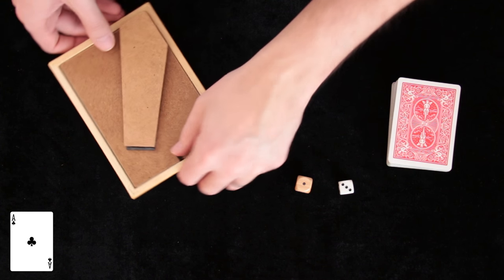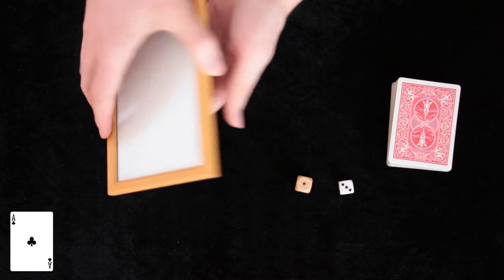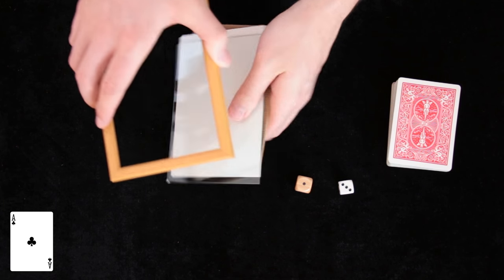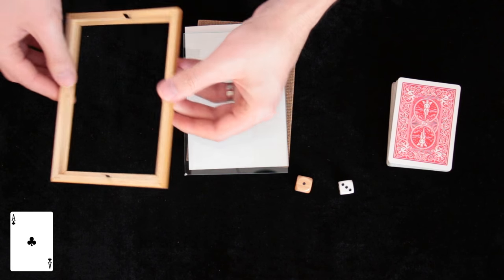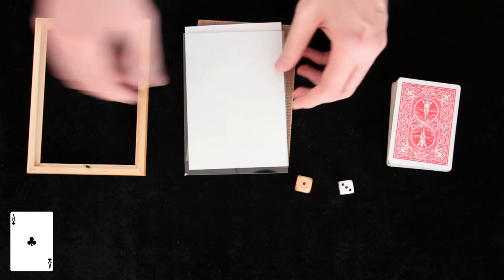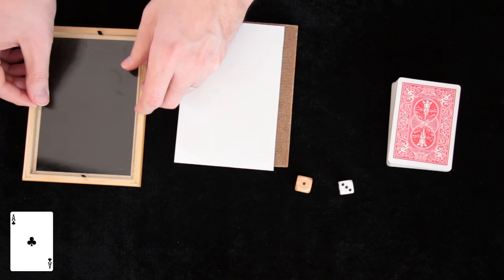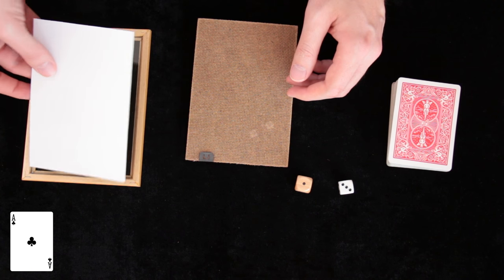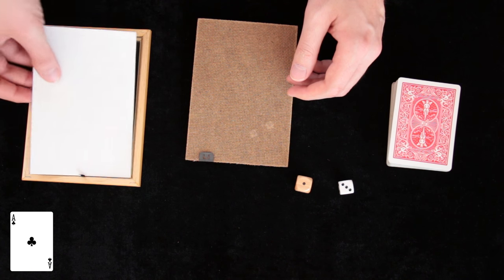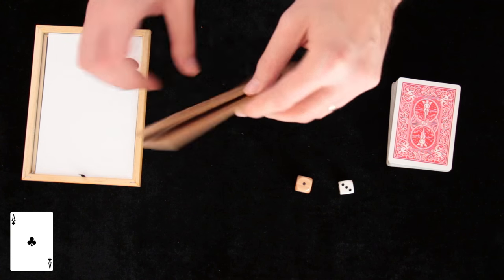But today we will look together what's inside. So we will unlock it and we will now discover that we have here of course the frame, this is usually made of wood or some plastic, we have here this piece of solid glass and usually they give you some kind of illustration or photo or just this piece of paper and of course here we have the back with the stand.